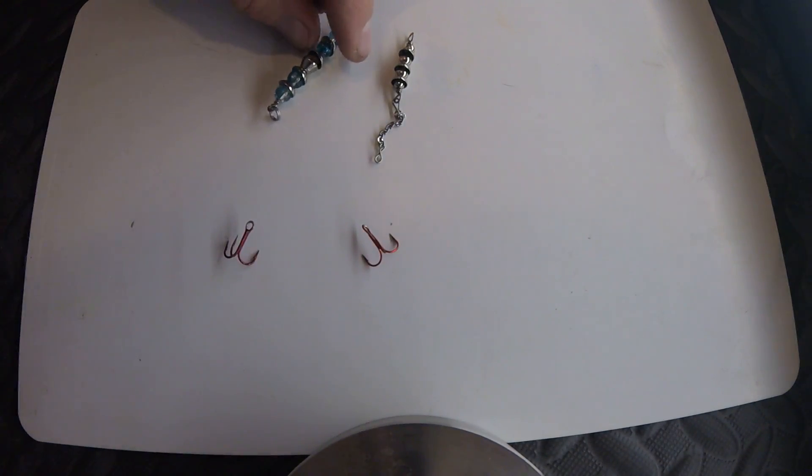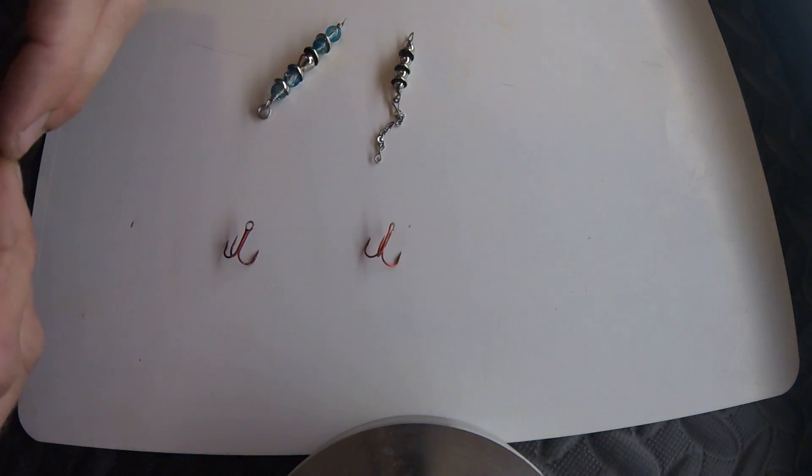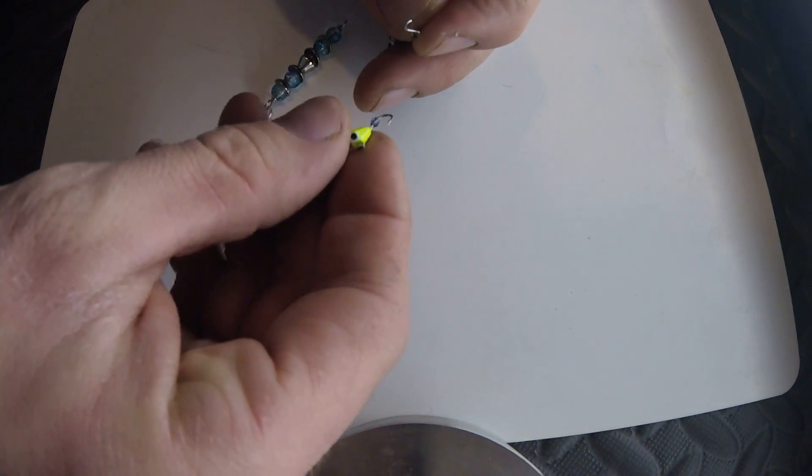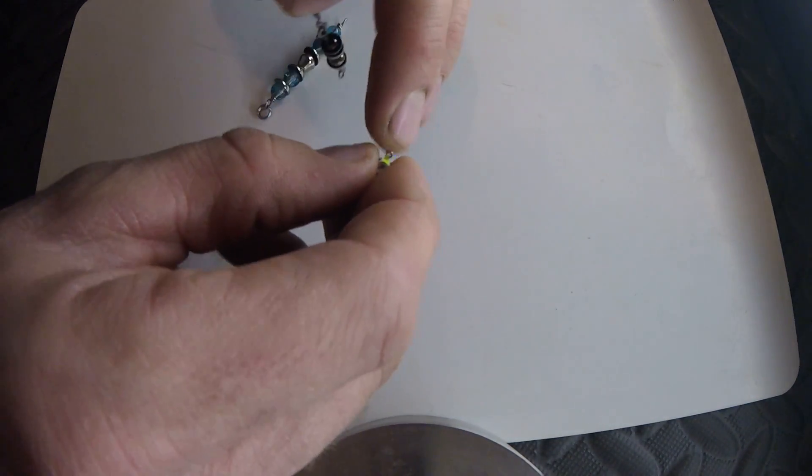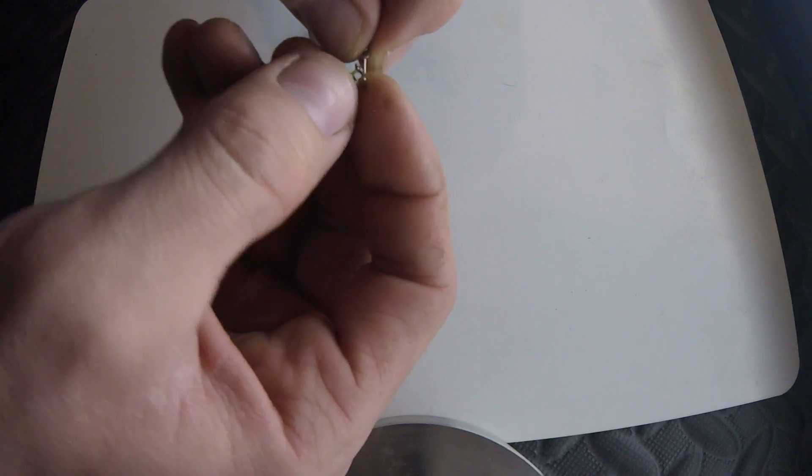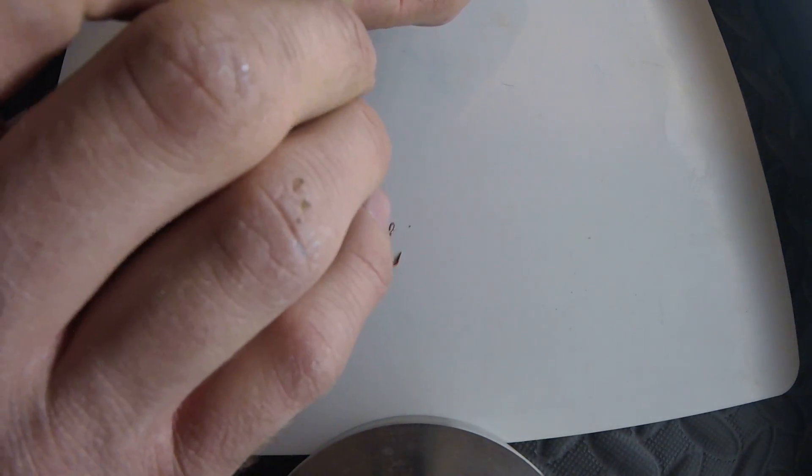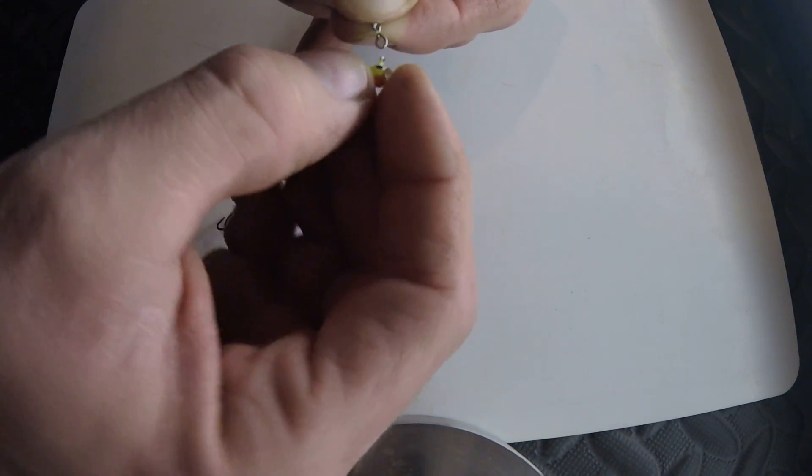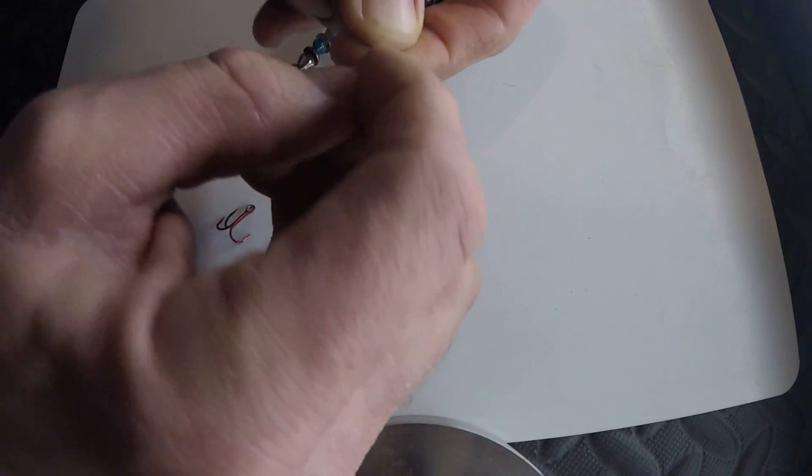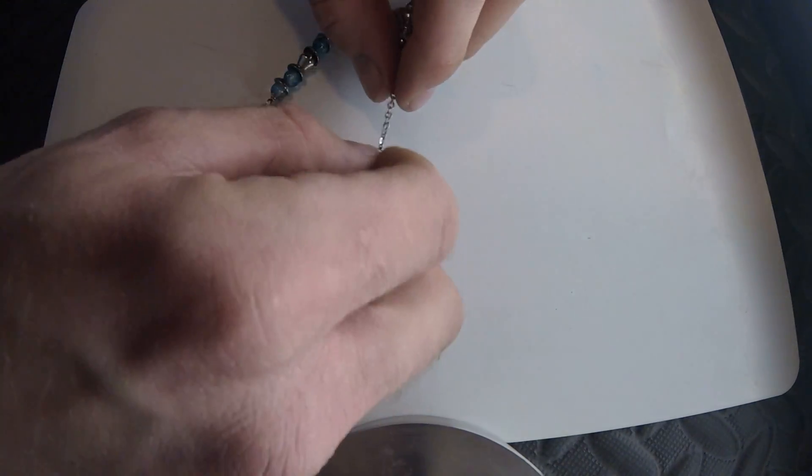I took this treble hook off and you can change it up by taking a different jig head, providing that the hole is big enough to go on this. I'm going to make sure you slide it down so it's facing the right direction. There you go.